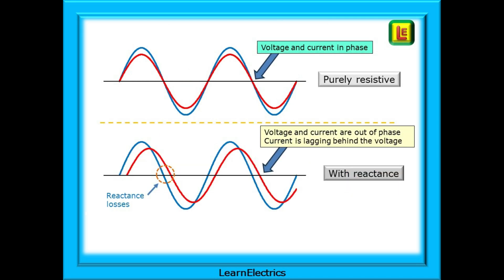This means that the maximum amount of power is delivered into the circuit. But in a circuit with reactance, as shown in the bottom graph, the voltage and current are not in phase. Certain components will create reactance — either inductive or capacitive — such as motors, welders, generators, fluorescent lighting, and transformers. These reactances make for inefficiencies in the system and cause losses, meaning not all the power from the supply is turned into useful energy at the point of use. And somebody is paying for that.